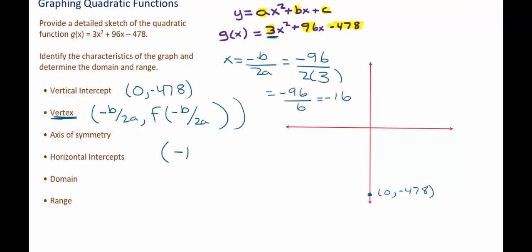So this tells me the x-coordinate of the vertex is negative 16. In a moment, I'll plug negative 16 into the original function to find the y value of the vertex.